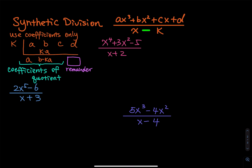So let's say the divisor is x squared plus x minus k — then we cannot use synthetic division. The difference is: synthetic division uses coefficients only, so the work is much cleaner, but the disadvantage is that it only works for a binomial.